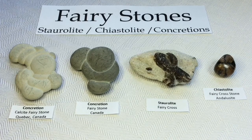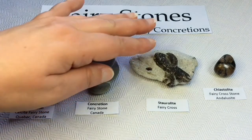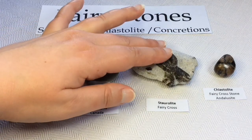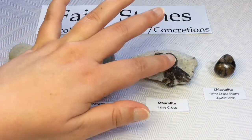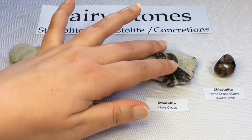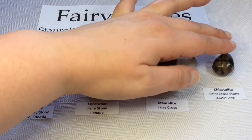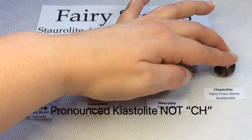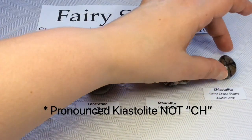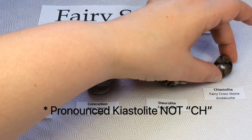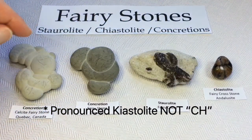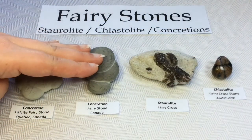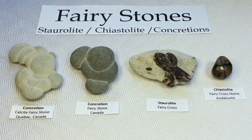The true geological term for these rocks would be staurolite. This mineral here — staurolite — chiastolite, sometimes referred to as andalusite, but we'll get into that — and these beautiful, interesting, unique concretions.